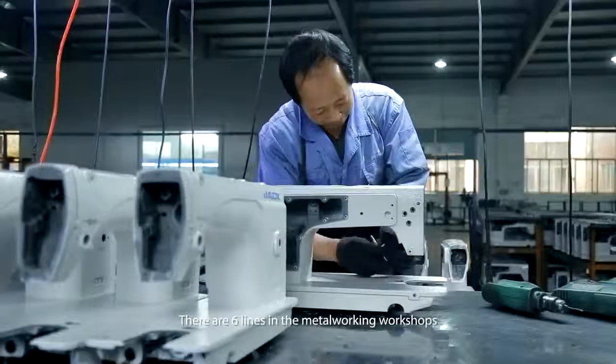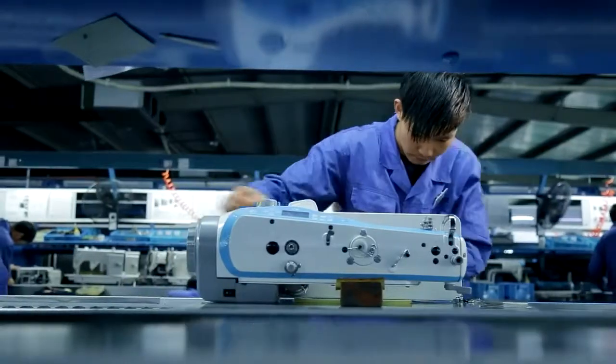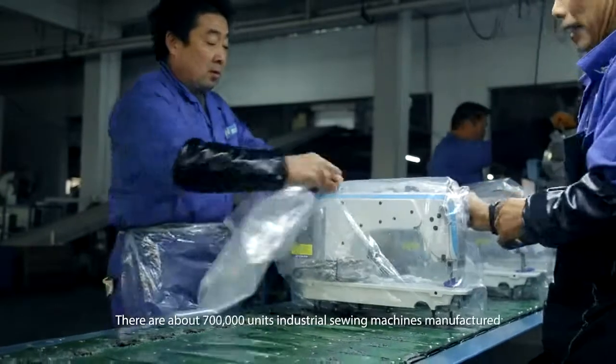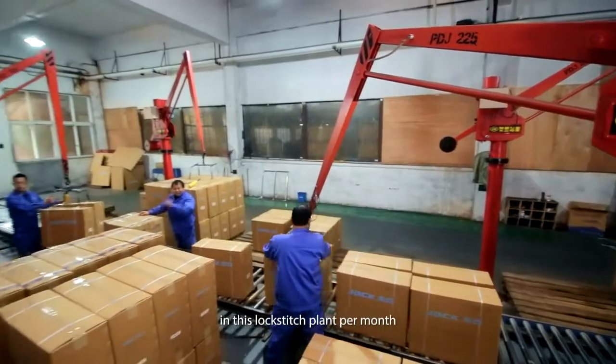There are six lines in the metal working workshops and 21 assembly lines. There are about 700,000 units of industrial Sui machines manufactured in the lockstitch plant per month.